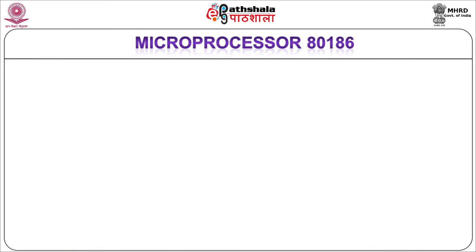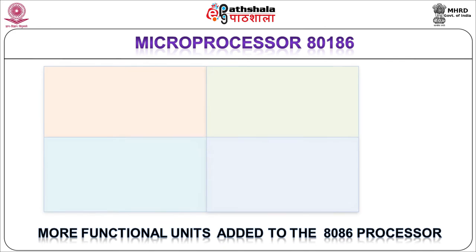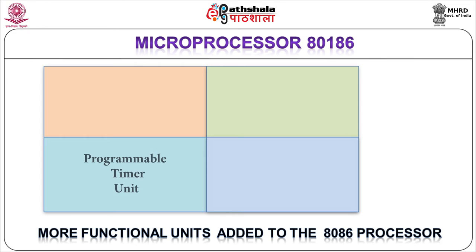The next member of the 80x86 family is the 80186. It has an on-chip timer and interrupt control unit. The timer unit consists of 3 timers, of which 2 generate waveforms usable as a clock source for external devices. The interrupt control unit of 80186 controls all internal and external interrupts. Some powerful built-in I/O features and 10 new instructions were added. It was capable of working at a maximum speed of 16 MHz and was used mostly in industrial control applications.